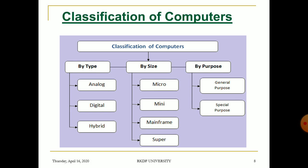By size, we have four different categories: micro, mini, mainframe, and supercomputer. Let us discuss all these one by one.